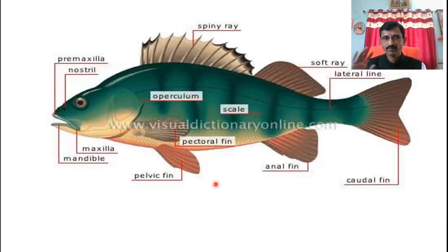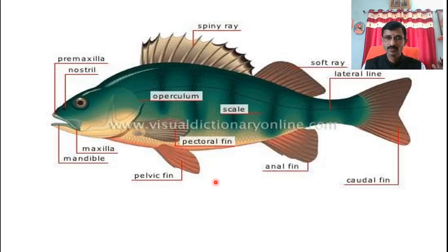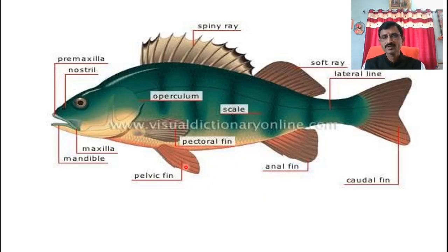Here is a figure of fish. Some points from the definition - locomotion by means of fins. The fins shown here: this is the caudal fin, this is the dorsal fin - two dorsal fins are present. This is the caudal fin for the purpose of locomotion. This is the anal fin and this is the pelvic fin. The functions we will see in the next video. Dorsal fin, caudal fin, anal fin, and pelvic fin - this is the structure of fish.